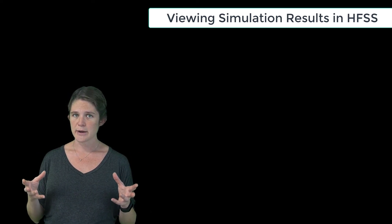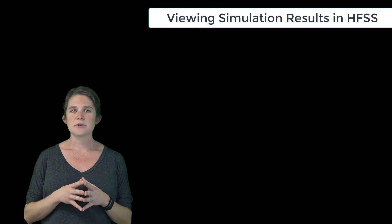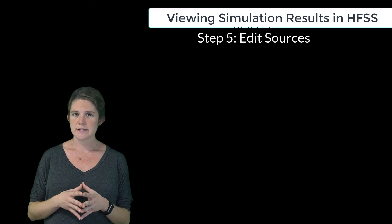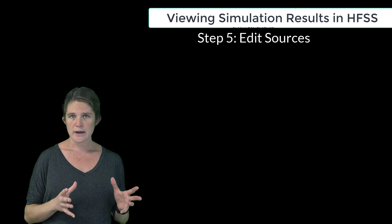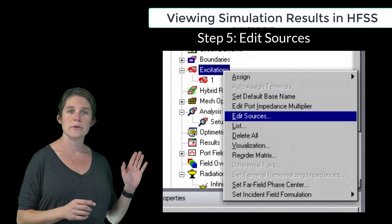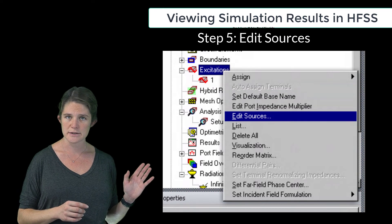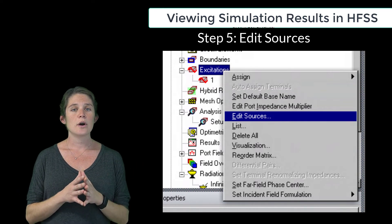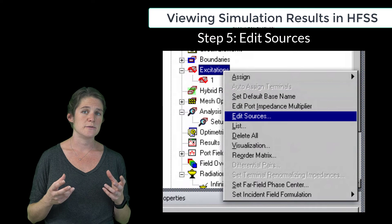The final thing I want to point out as far as viewing the results from an array simulation is that if your array is defined as we've done here, using a single element repeated over some period using the master-slave boundaries, it is possible to adjust the feed signals of the various elements in post-processing without having to re-simulate the array. To do that, you can either go through the Edit Sources menu under Excitations, as we did before, or if you've defined your sources in terms of variables, you can simply change those variable values, and the result plots will update to match.